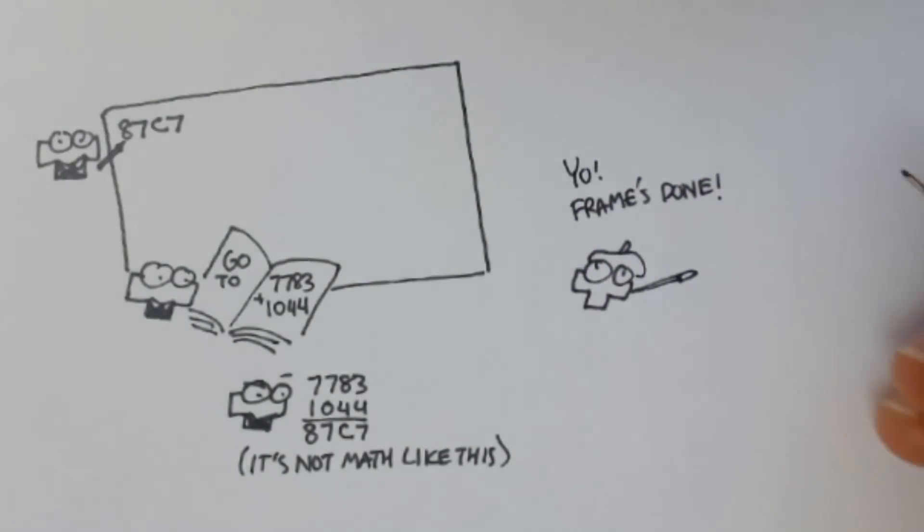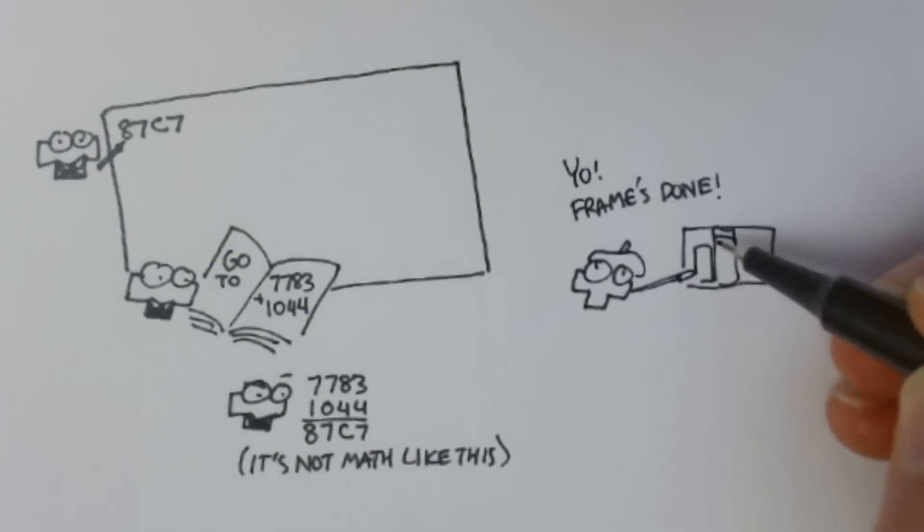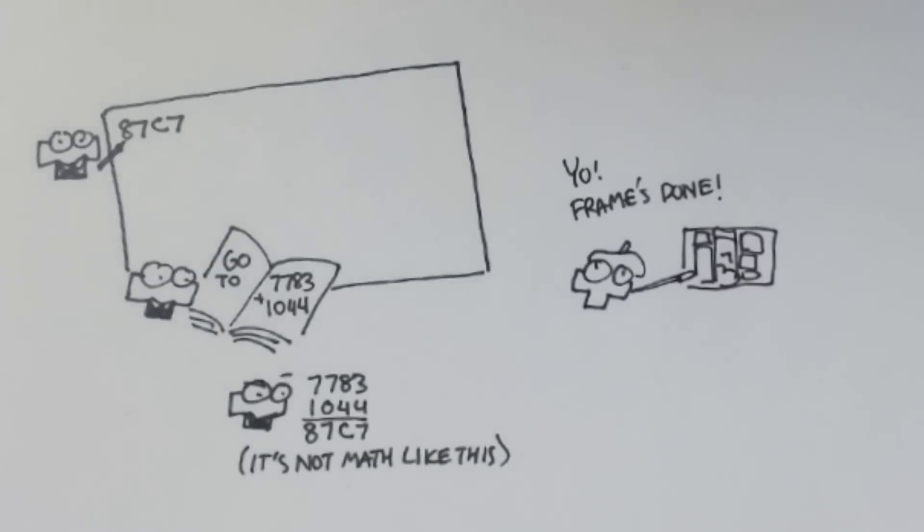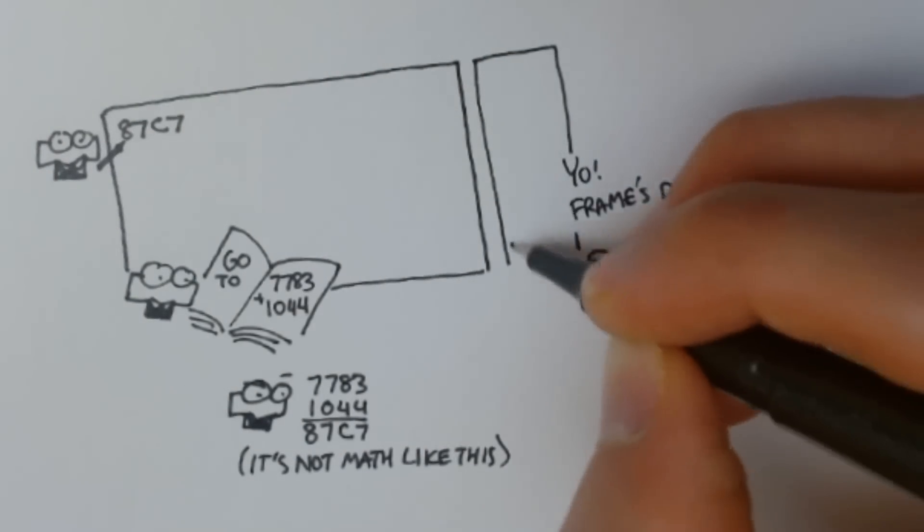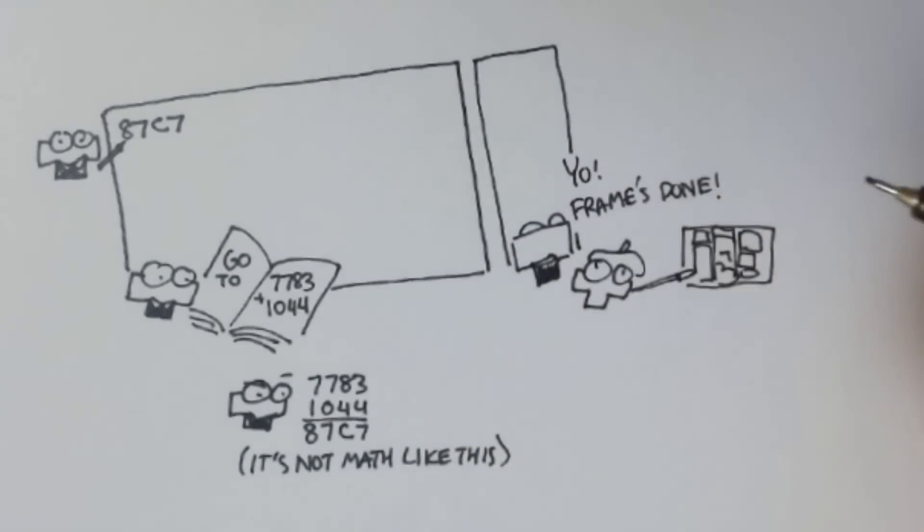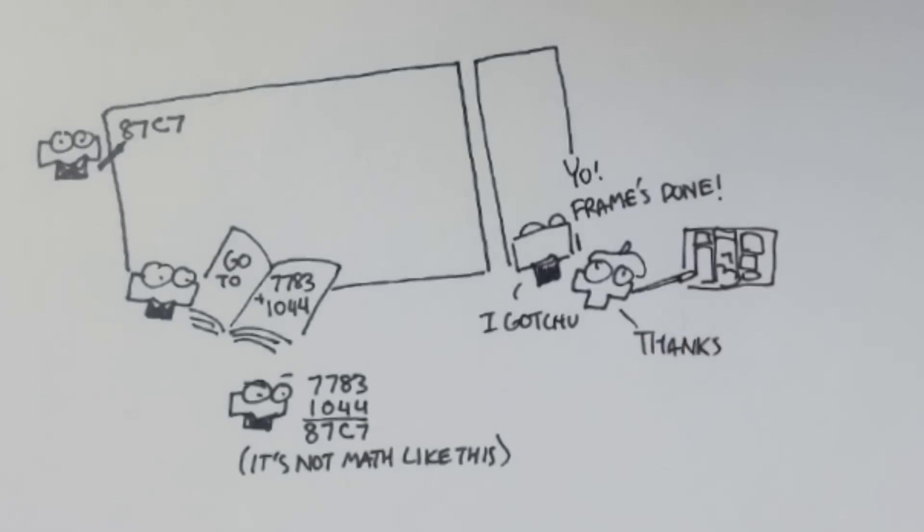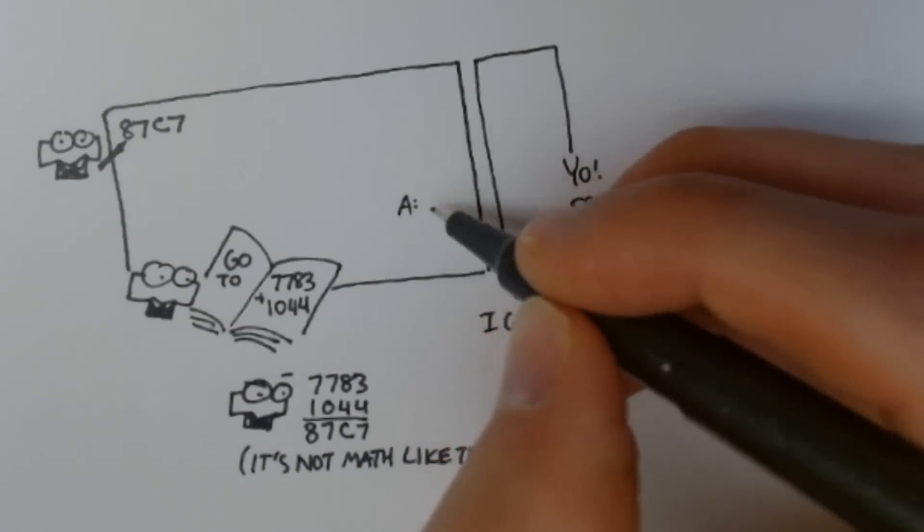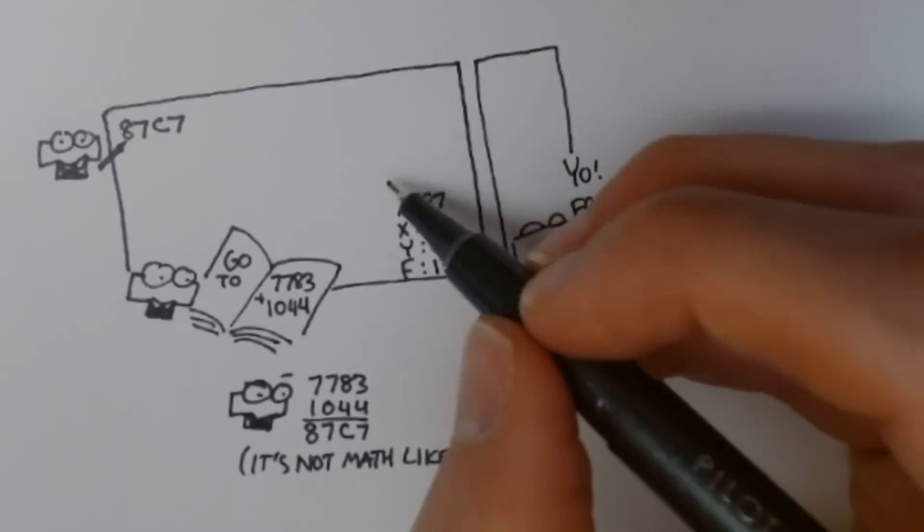This would never happen normally, but the processor had spent so much time earlier doing the math for scoring that it ran out of time in the frame to do everything else it was supposed to. The processor knowing that this is the only chance it's going to get, it quickly writes down everything in its head so it could come back and remember what it was doing when it's done doing the graphics.